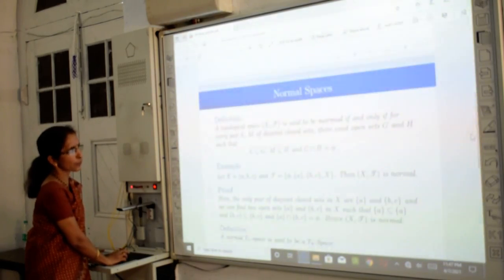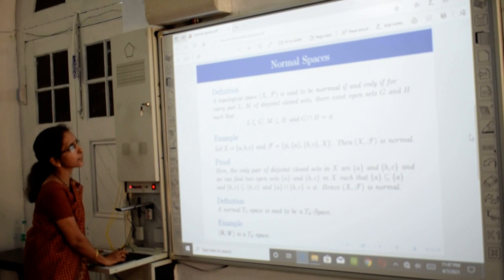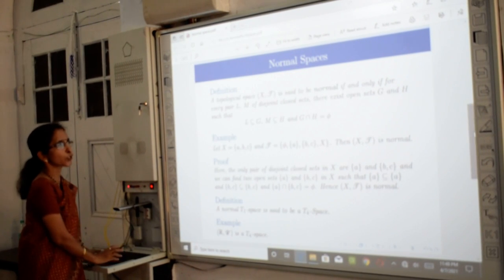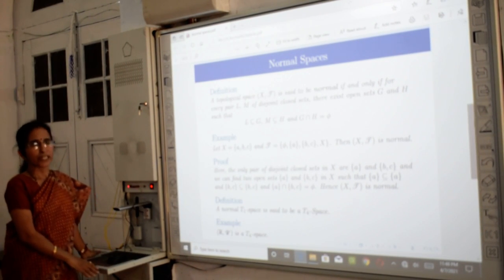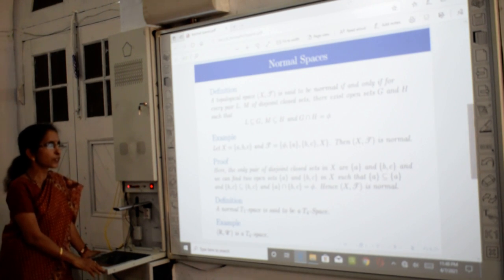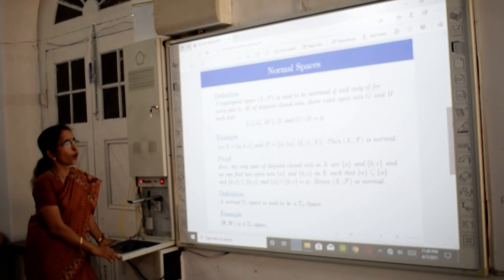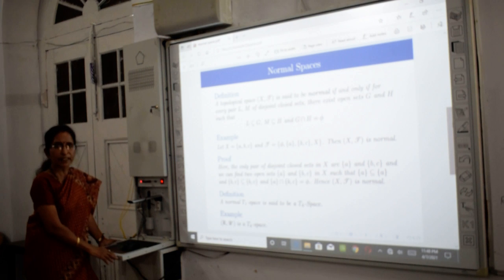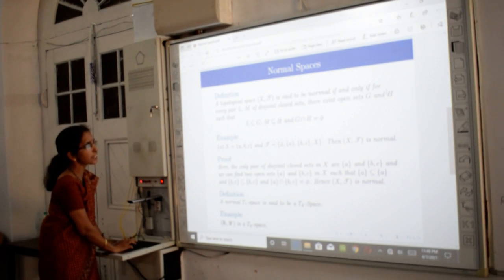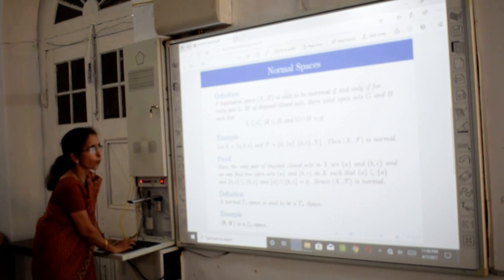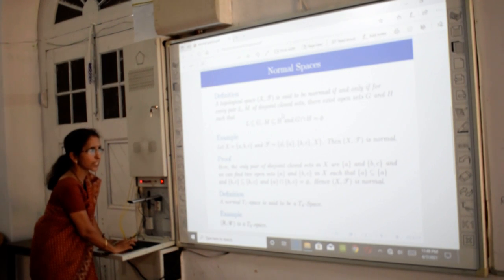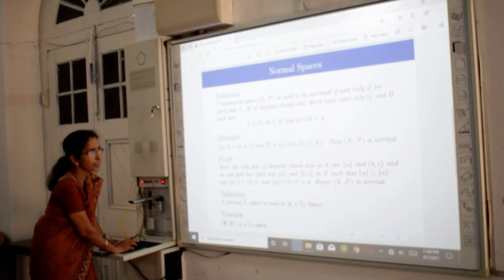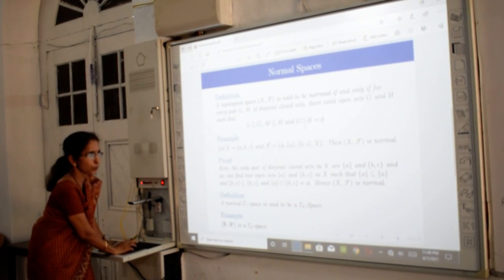Before defining T0 spaces, we need to define normal spaces. A topological space is said to be normal if, for every pair of disjoint closed sets L and M, there exist open sets G and H such that L is contained in G, M is contained in H, and G and H are disjoint. So here, for disjoint closed sets, we need disjoint open sets containing these closed sets.